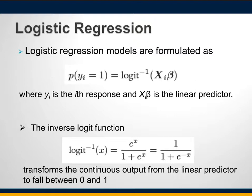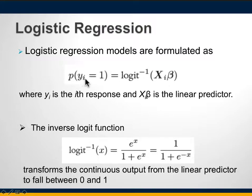If you remember, we had an equation for a linear model: beta_0 plus beta_1 times x plus the error term. What this essentially means is that the probability of the dependent variable being one is given by the logistic regression function. This function works with logarithms.